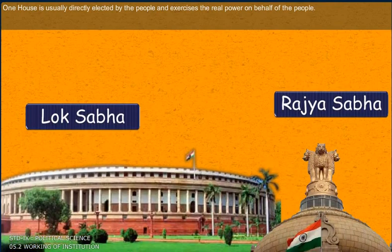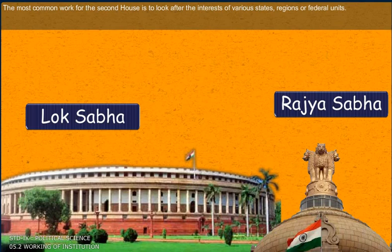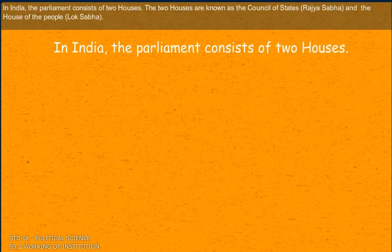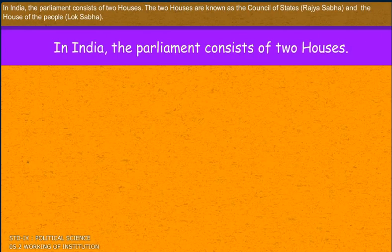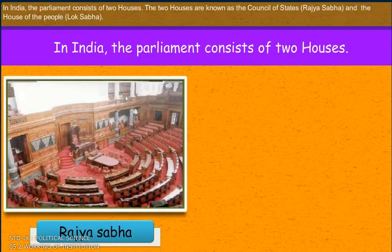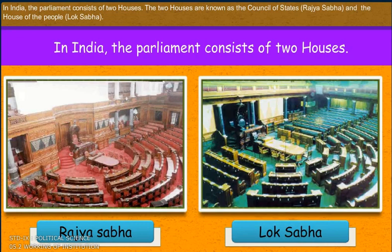One house is usually directly elected by the people and exercises real power on behalf of the people. The most common work for the second house is to look after the interests of various states, regions, or federal units. In India, the parliament consists of two houses known as the Council of States, i.e. Rajya Sabha, and the House of the People, i.e. Lok Sabha.